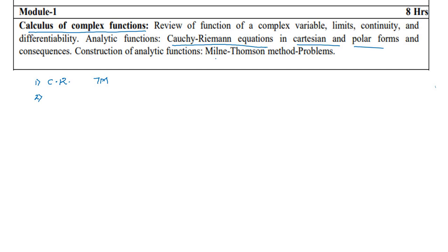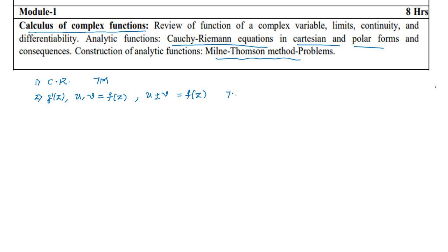Go with the second one — by using the Milne-Thomson method, you are required to find the analytical function. That is finding F'(Z). They can also provide U or V and you are required to find out the analytic function F(Z). Definitely out of these three types there will be one problem, and you can score a minimum of 7 marks.